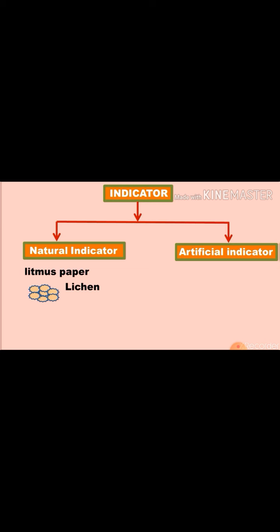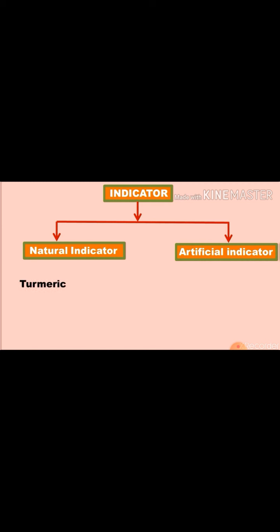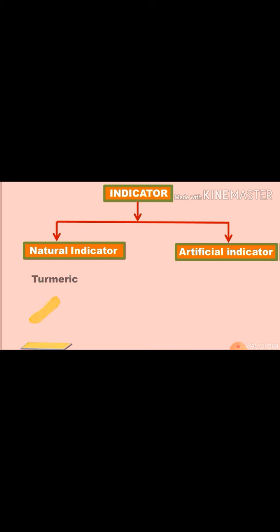Litmus paper is available in the form of strips — red strips and blue strips. Turmeric is also a natural indicator; you can easily prepare turmeric paper at home. Next is China rose petal. If you extract the juice of China rose petals, we get the natural indicator China rose.